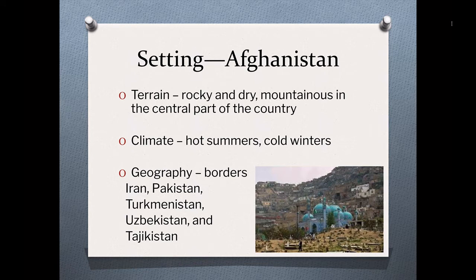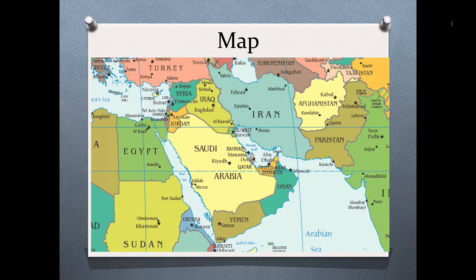While it is a rocky and dry terrain, it is also mountainous in sort of the center part of the country. Like Colorado, the climate has hot summers and cold winters. You can see all of its border countries identified on this map. The majority of the beginning part of the book takes place in Kabul, but at some point they emigrate into Pakistan and then ultimately to the United States.